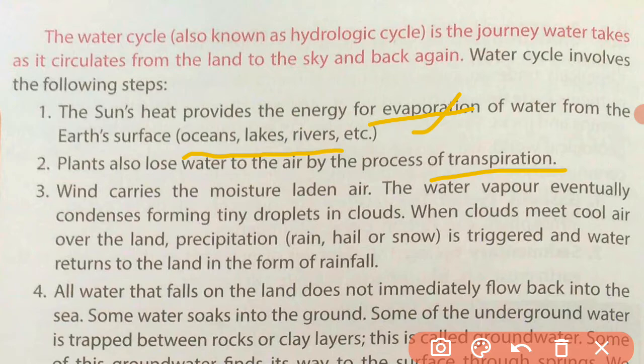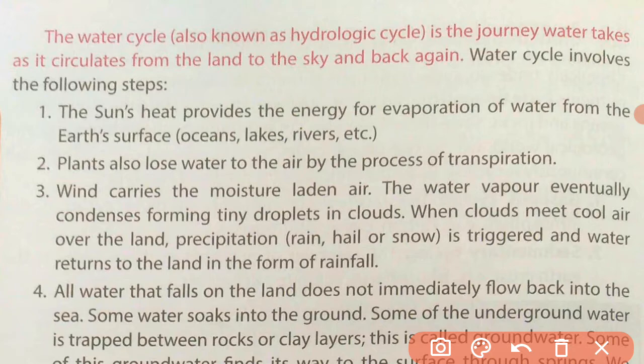Wind carries this moisture and water vapor upward. When the water vapor reaches a certain height in the sky and the air expands, the water vapor converts into tiny droplets and forms clouds.